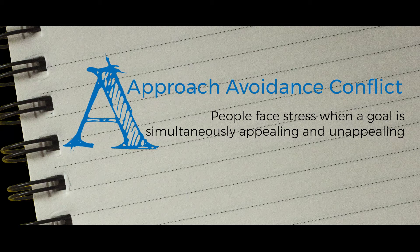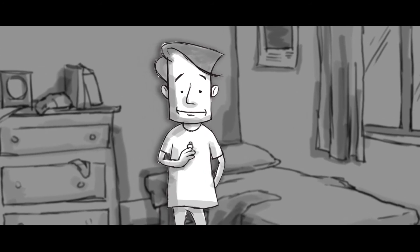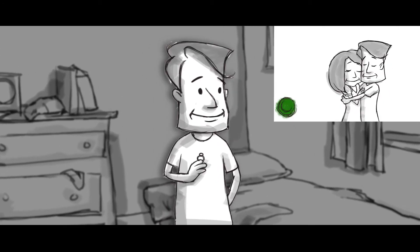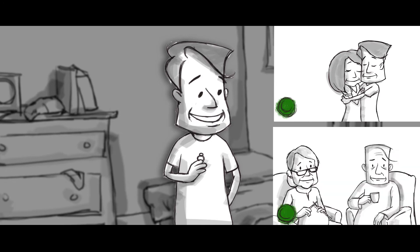A for Approach Avoidance. An approach-avoidance conflict occurs when someone is faced with a decision to pursue or avoid something that has both great advantages and disadvantages. For example, let's take the case of marriage. The prospect of love, companionship, caring, and comfort that comes from marriage can make someone want to propose to their partner — that is, they are approaching the concept of marriage.